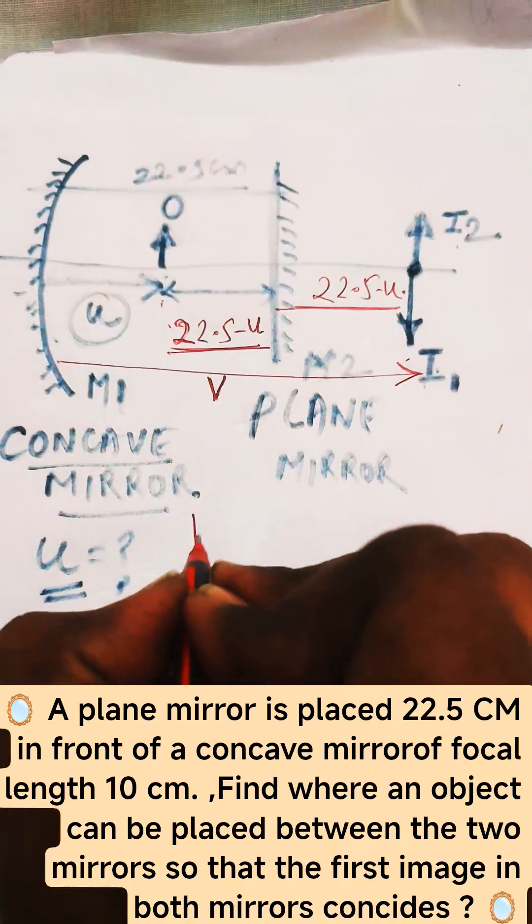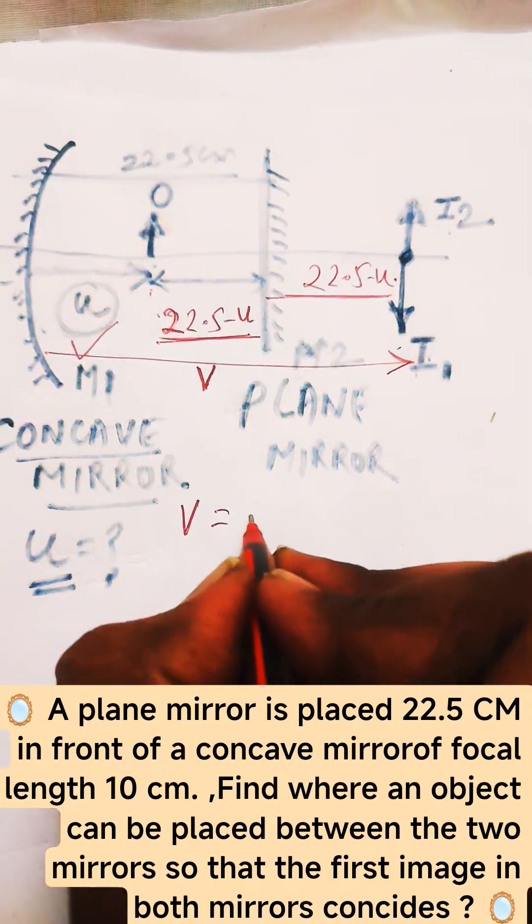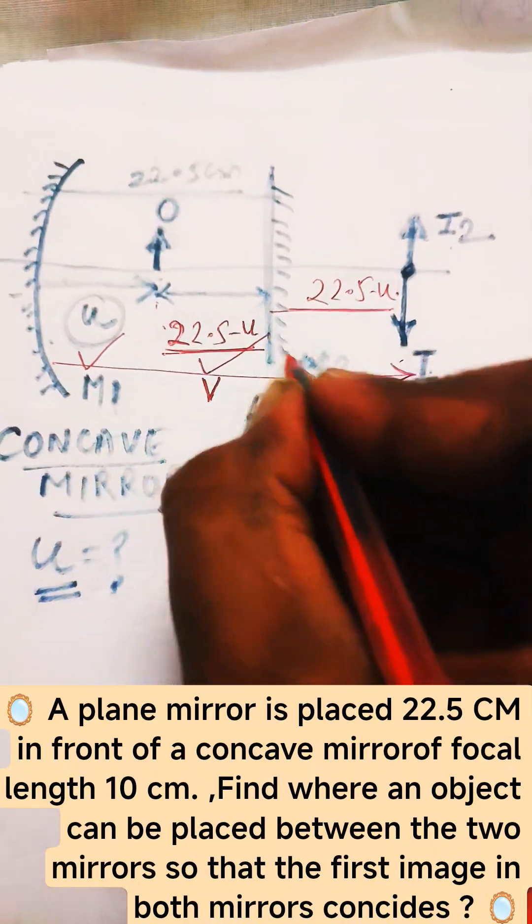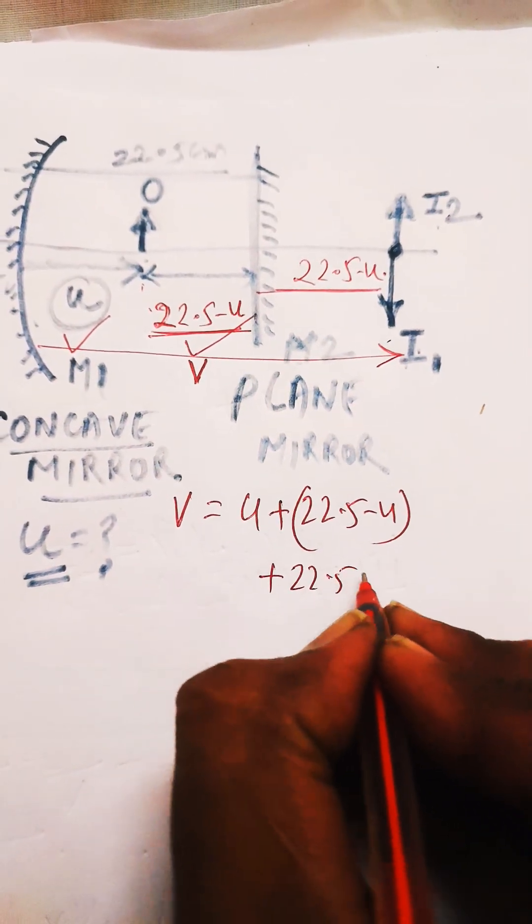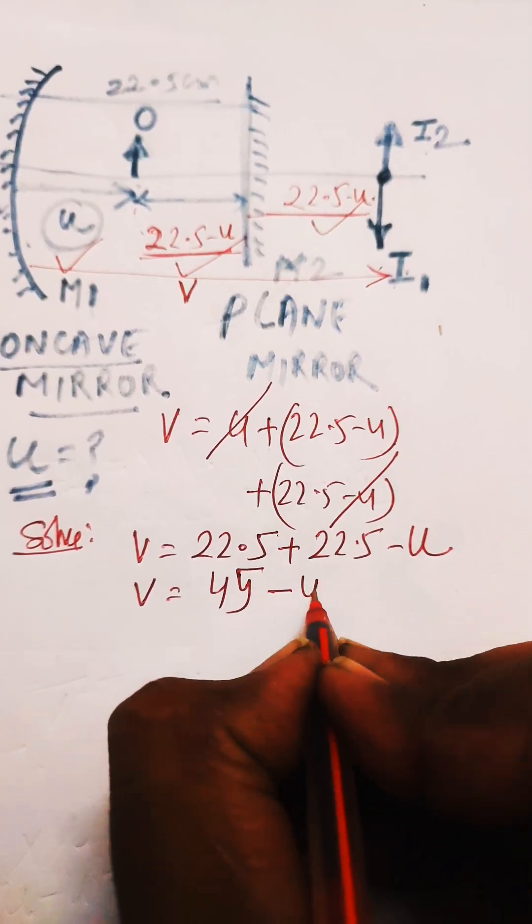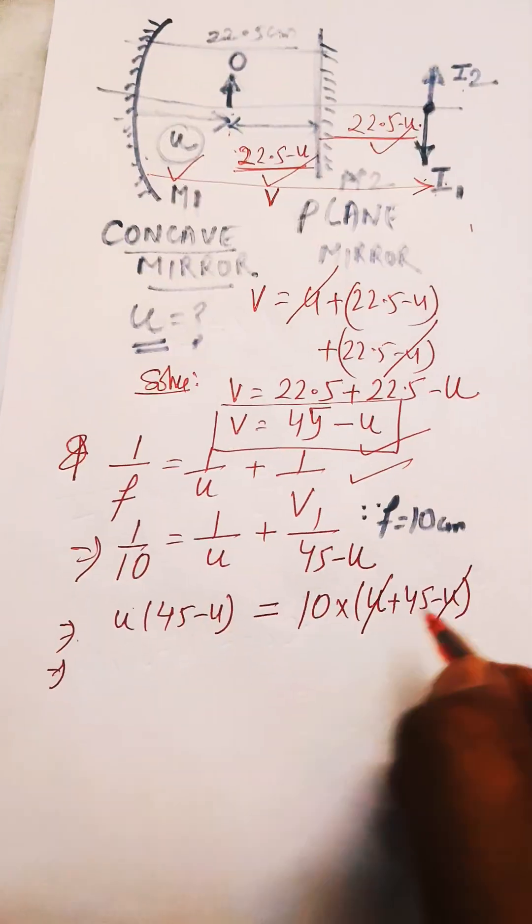the concave mirror. And v should be equal to u plus 22.5 minus u, plus 22.5. Then use the mirror formula to calculate the value of object distance u.